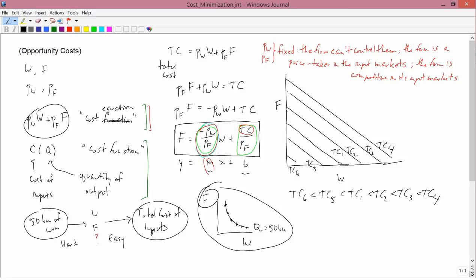So we have a family of total cost curves. The firm can pick whichever one he wants. And in the next video, we're going to think about the firm's problem of how to pick the appropriate total cost curve.